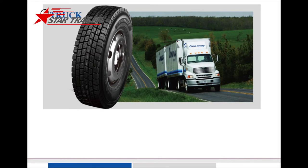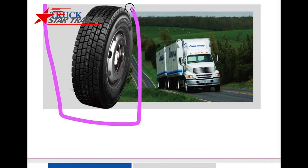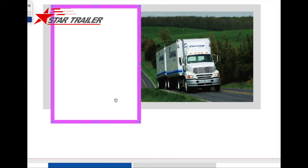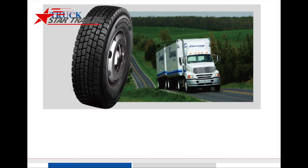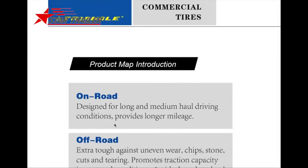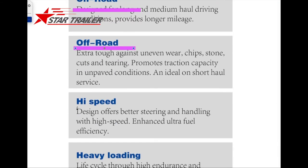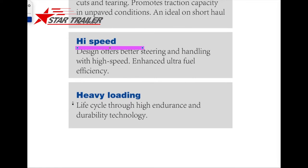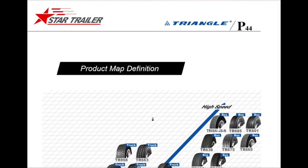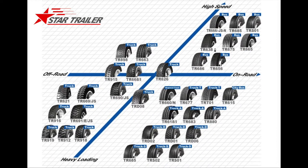The semi-trailer tire is usually similar to the truck tire, but a little bit different. It usually has on-road tire, off-road tire, high-speed tire, and heavy-loading tire. You can see it has a lot of different regions with many different requirements.